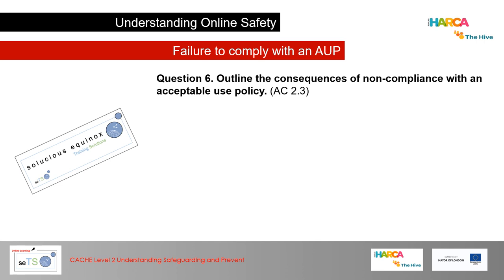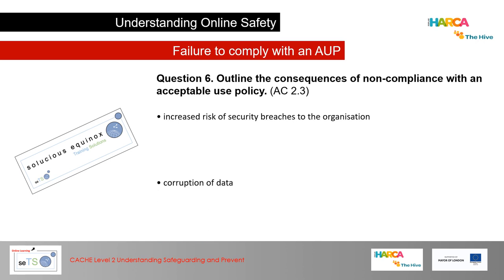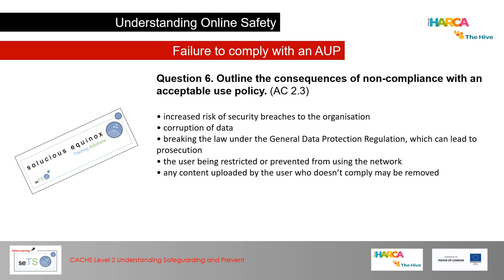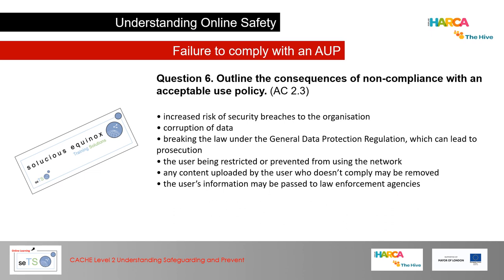Question 6 asks you to outline the consequences of non-compliance with an acceptable use policy. Key points: increased risk of security breaches to the organisation, corruption of data, breaking the law under the GDPR which can lead to prosecution, the user being restricted or prevented from using the network, any content uploaded by a non-compliant user may be removed, and the user's information being passed to law enforcement agencies.